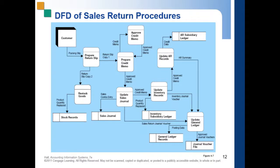First, update the sales journal. Since the goods were returned, you recognize the sales return entry. After updating the sales journal, the approved credit memo is then forwarded to the inventory control function.